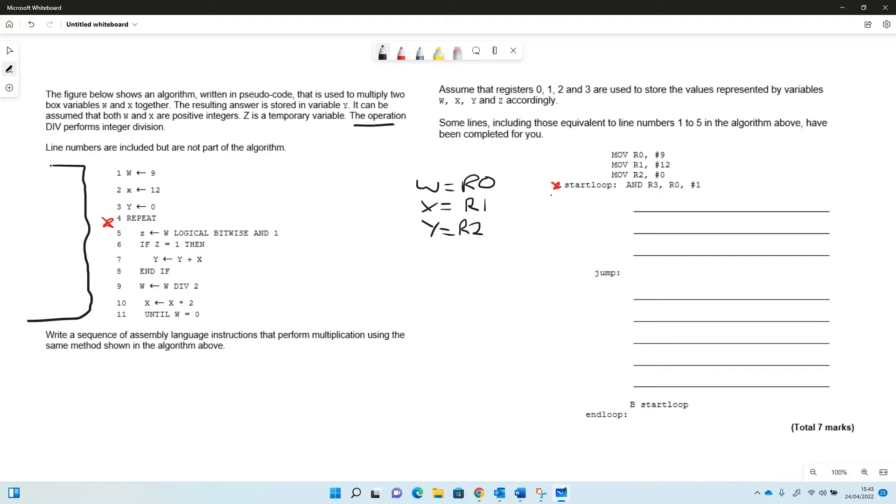It's telling us here that the operation div performs integer division. It's given us one or two things to work with, and they've actually written some code for us at the beginning. So this code they've written at the beginning moves the number nine into register zero. We can look at this code and think to ourselves that these three variables have already been done for us. So w in this code on this side is equivalent to register zero, and x is equivalent to register one, and y equivalent to register two.